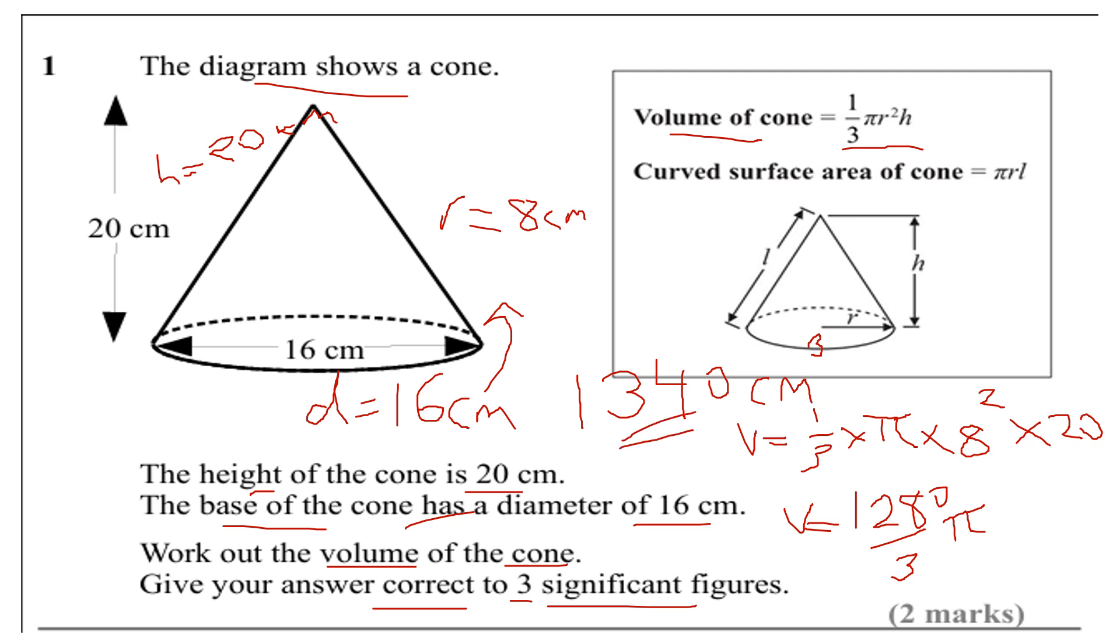So that's my final answer. That's how we work out the volume of a cone: one-third π r² h. We substitute in h equals 20 and r equals 8. 8 squared is 64, 64 times 20 is 1,280, divided by 3 and then times π. When we put it in the calculator we get 1,340 centimeters cubed to three significant figures. Thank you very much.